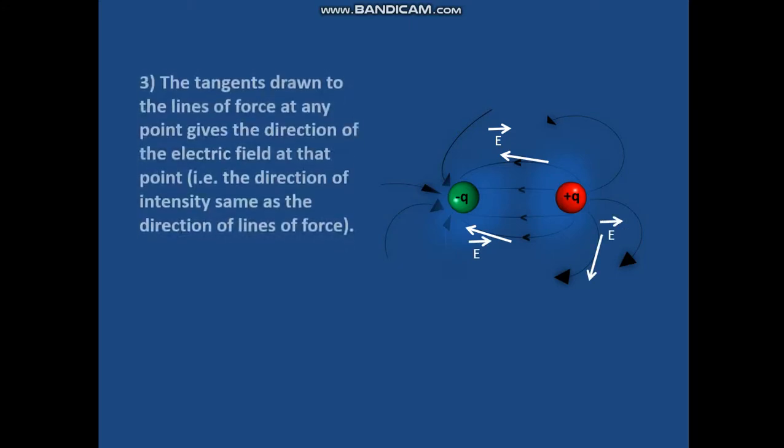The next property: we have drawn tangents on the lines of force. These are nothing but the direction of the electric field. The tangents drawn through the lines of force at any point give the direction of the electric field at that point - that is, the direction of intensity is the same as the direction of lines of force.